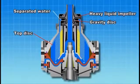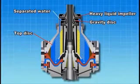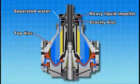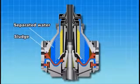The separated water passing outside of the top disk overflows from the gravity disk and is discharged from the heavy liquid impeller. Sludge and separated water are then discharged from the outlet to complete the cycle.